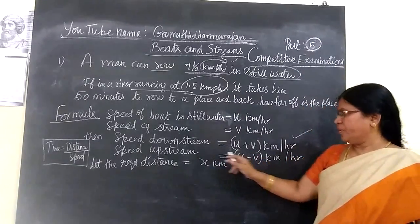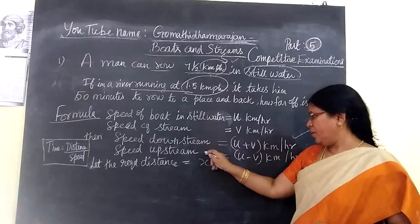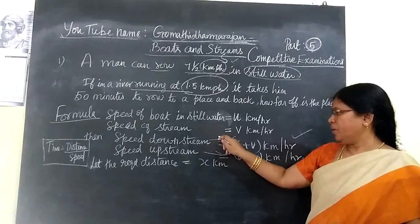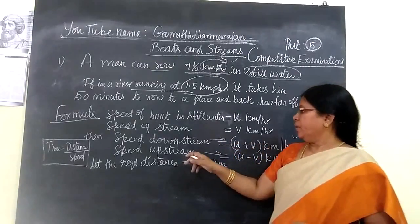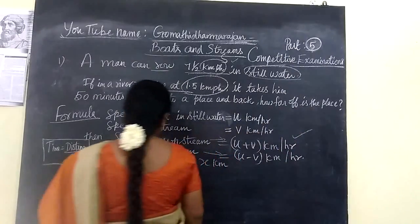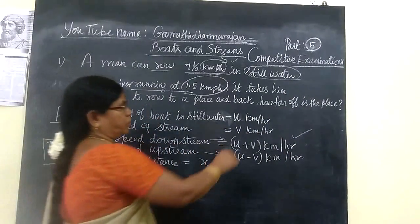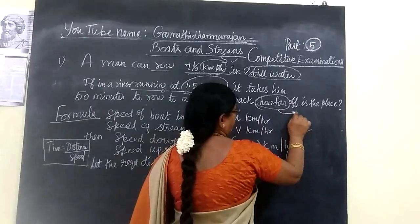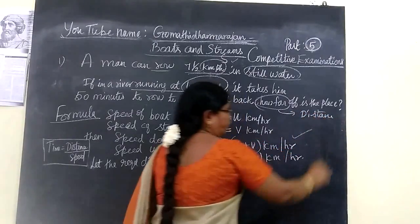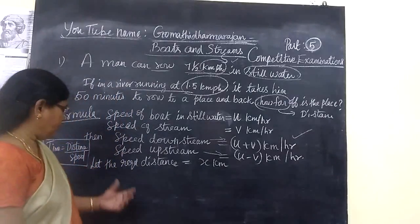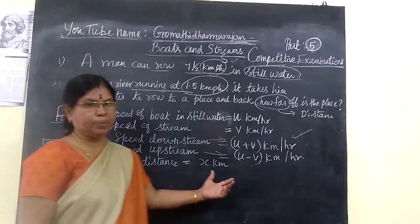Speed downstream is U plus V, speed upstream is U minus V. You are going to find the distance. How far? Let the distance be X kilometer.